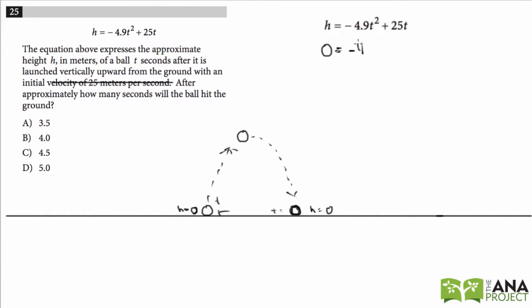So zero equals negative 4.9t squared plus 25t. Negative 4.9t squared plus 25t equals zero. I'm going to factor out a t. t times negative 4.9t plus 25 equals zero.